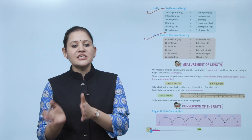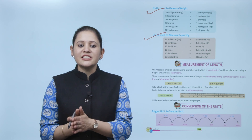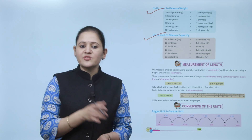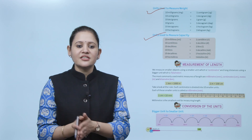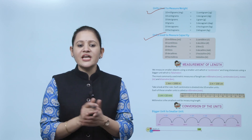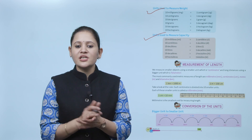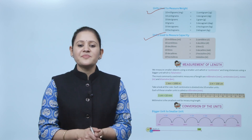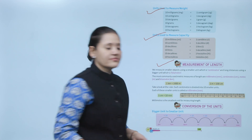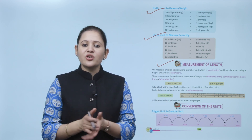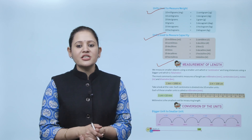Units used to measure capacity: 10 milliliters equals 1 centiliter, 10 centiliters equals 1 deciliter, 10 deciliters equals 1 liter, 10 liters equals 1 decaliter, 10 decaliters equals 1 hectoliter, and 10 hectoliters equals 1 kiloliter.